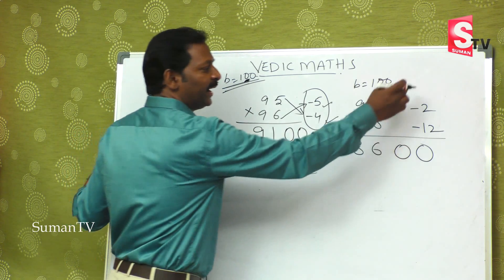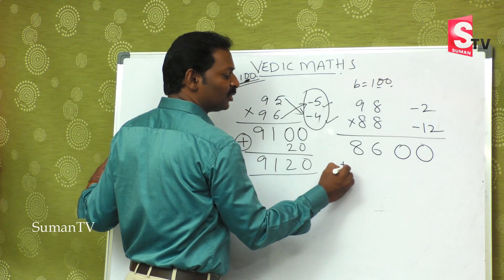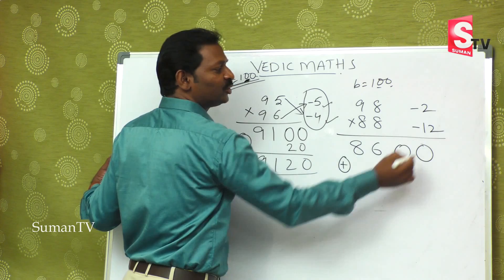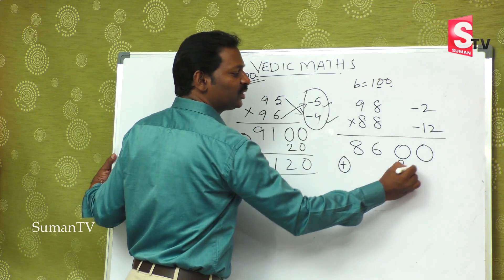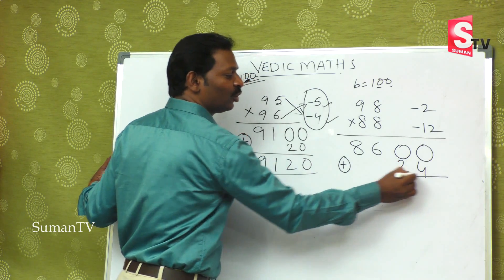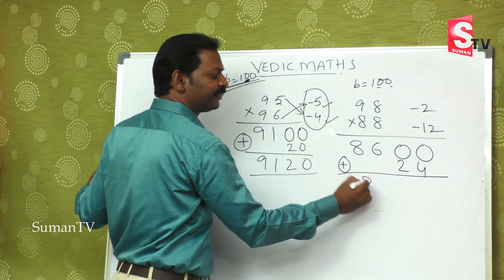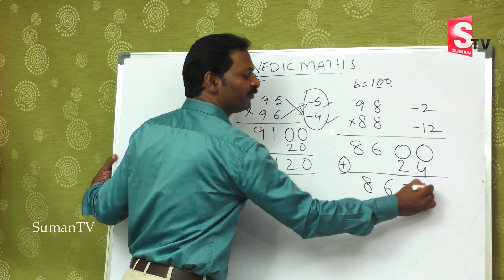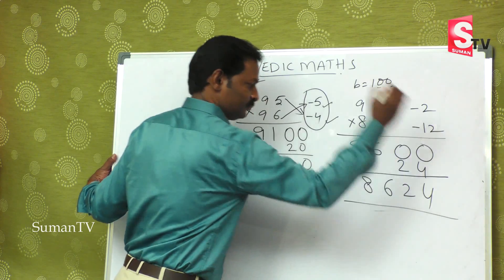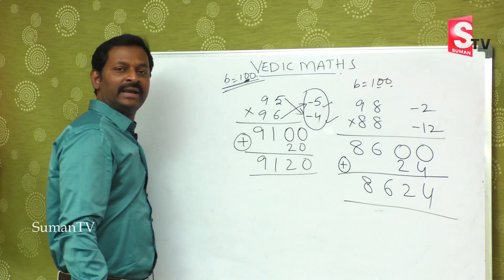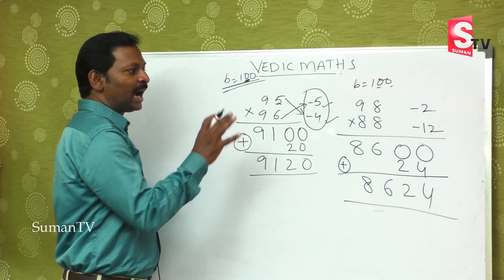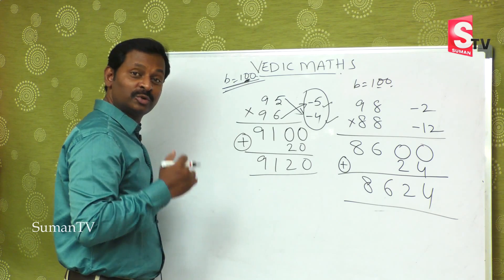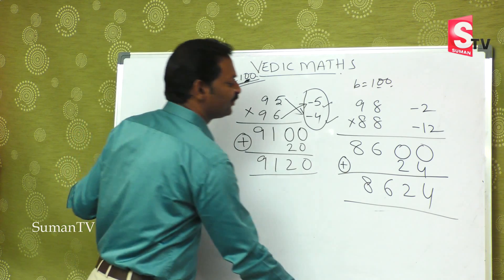Minus 12 multiplied by minus 2 — minus into minus is plus — gives 24. That is 8, 6, 2, 4. So the answer is 8624.